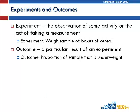The experimental definition of probability is based on experiments and outcomes. An experiment is the observation of some activity or the act of taking a measurement. For example, if you are working in quality control in a factory that produces cereal boxes, you might measure how many boxes are underweight by weighing each box that comes off the production line. That is the experiment.